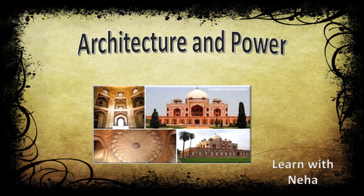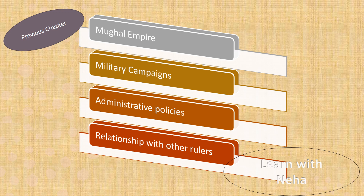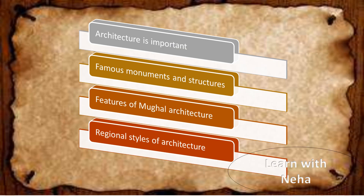Good morning students. Today we are starting Chapter 6: Architecture and Power. In the previous chapter we discussed the Mughal Empire, military campaigns of the Mughal emperors, their administrative policies, and their relationship with other rulers. In this chapter we will discuss why architecture is so important for our history, the famous monuments built during the medieval period, the main features of Mughal architecture, and which regional styles of architecture developed during the medieval period.